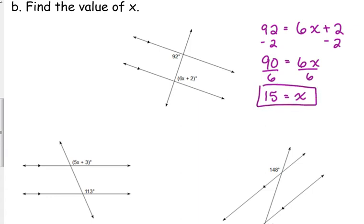Now, again, let me reiterate. That is not the measure of that angle. That was just the value of x. What is the measure of this angle represented by 6x plus 2? 92. Okay. It's the same as the other angle. We're just solving for that variable there.